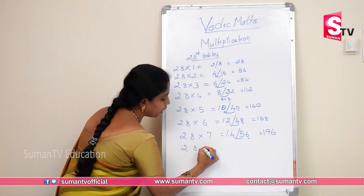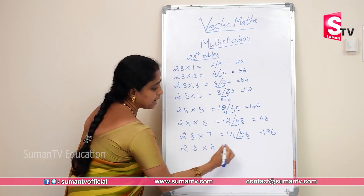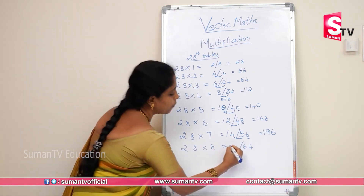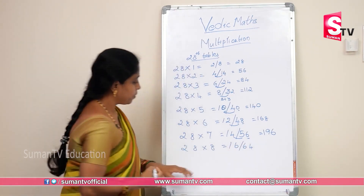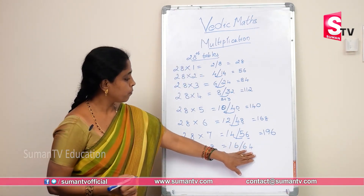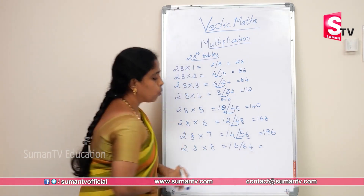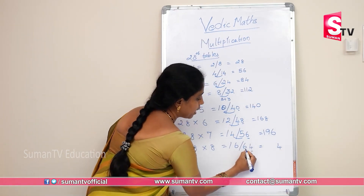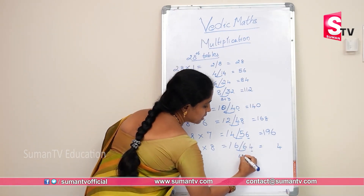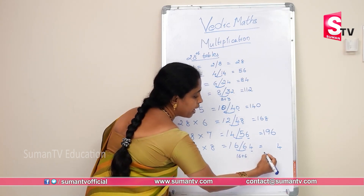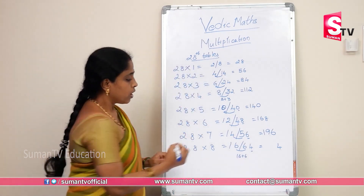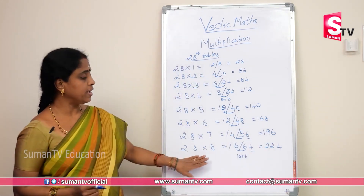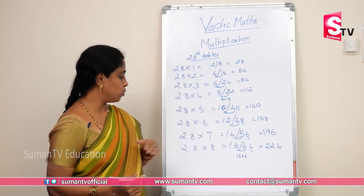28 into 8. 8×8 = 64. Put a slash. 8×2 = 16. In units place, write 4. Then 6 plus 6 — that is 16 plus 6, add the carry. The result is 224.